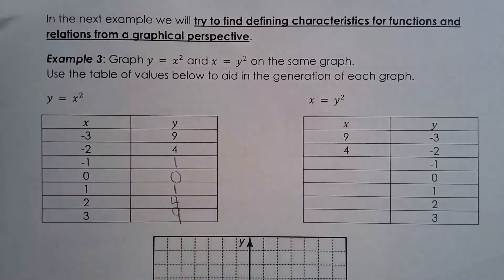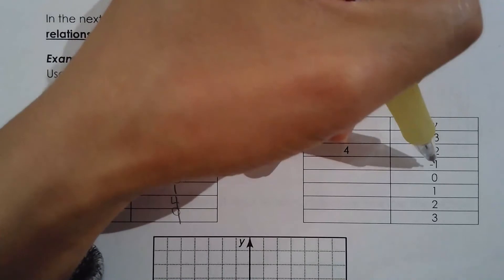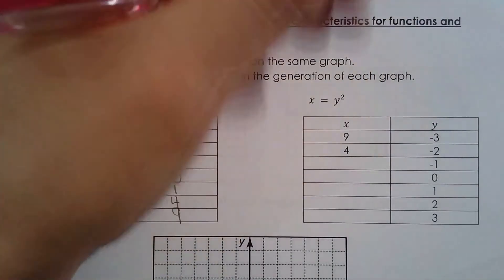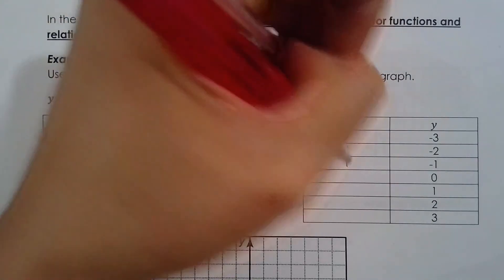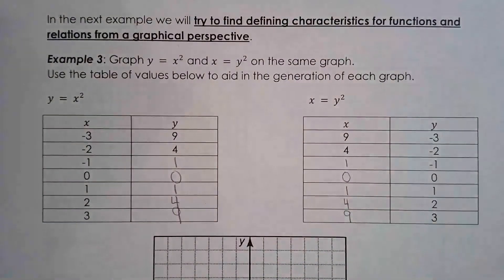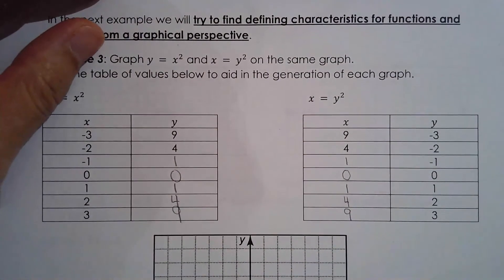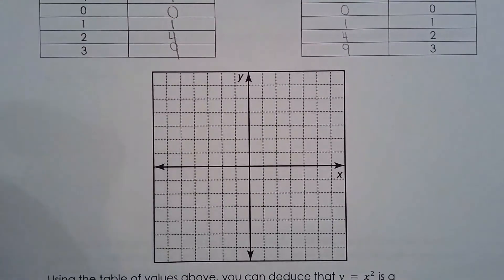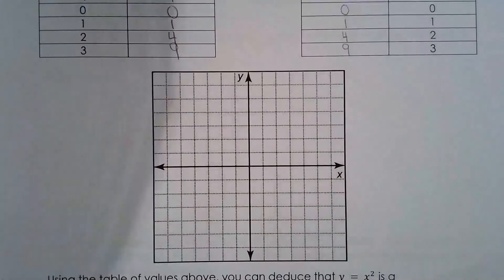What about x equals y squared? If negative one is y, then y squared gives x, so negative one squared is one, zero squared, one squared, two squared, three squared. Let's do the two graphs in different colors — green for y equals x squared and red for x equals y squared.